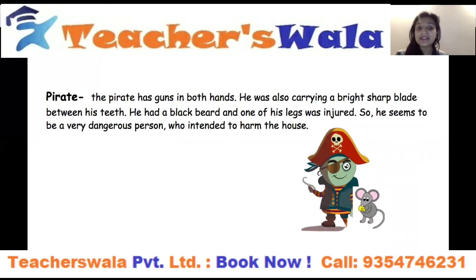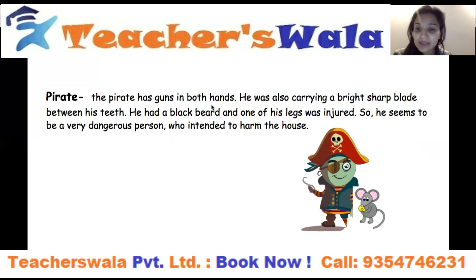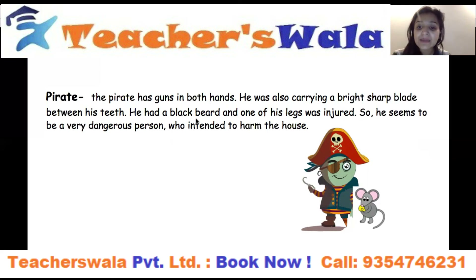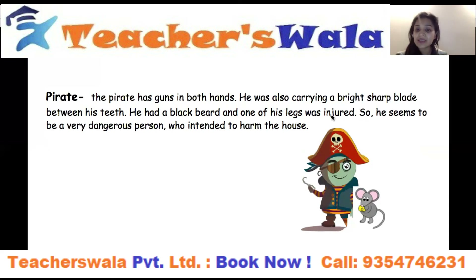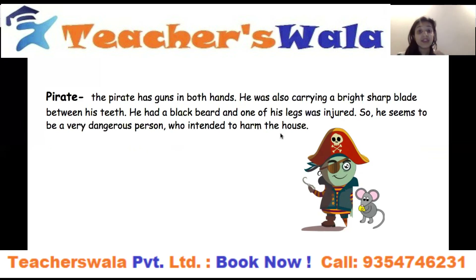Now the next character is the pirate. When the pirate comes, there is a little twist in the story. The pirate has guns in both hands and was also carrying a bright sharp blade between his teeth. He had a black beard and one of his legs was injured — he is physically handicapped with a wooden leg. He seems to be a very dangerous person who intended to harm the house.